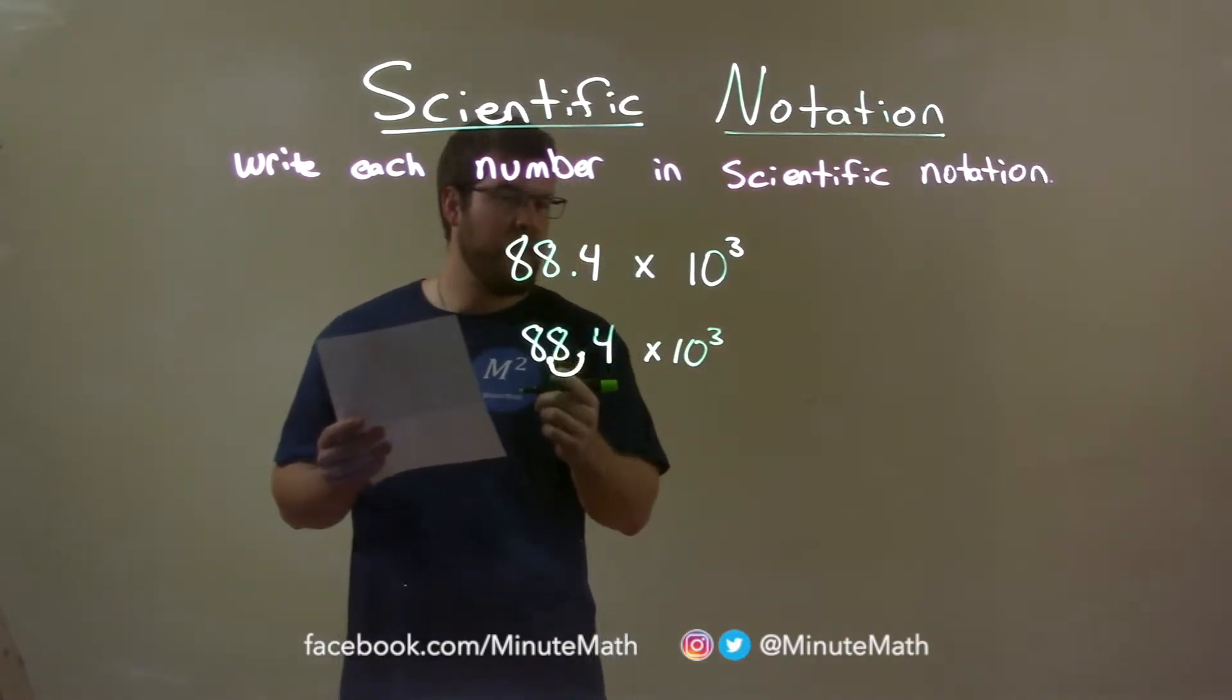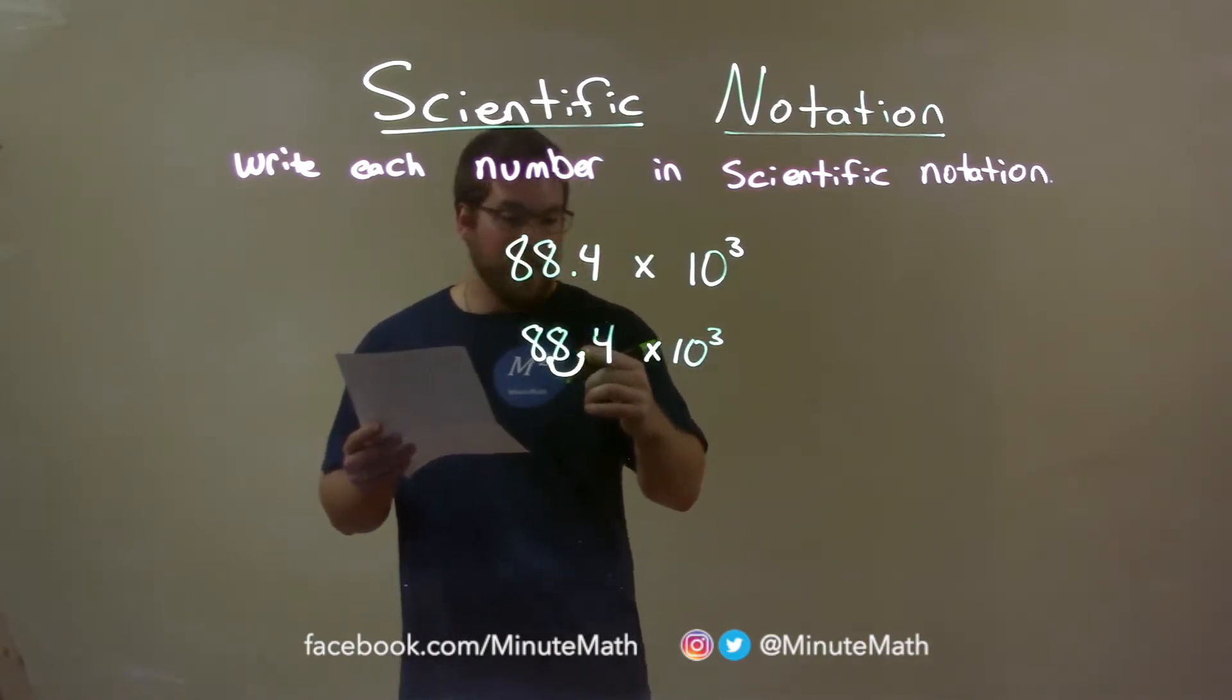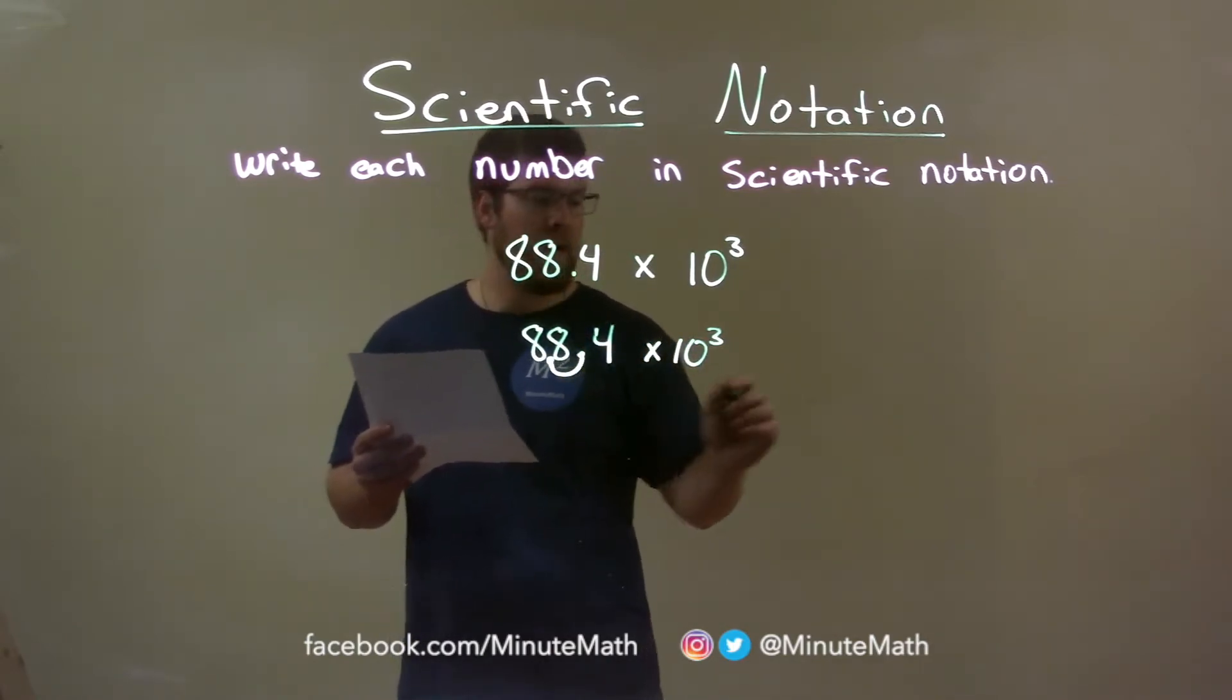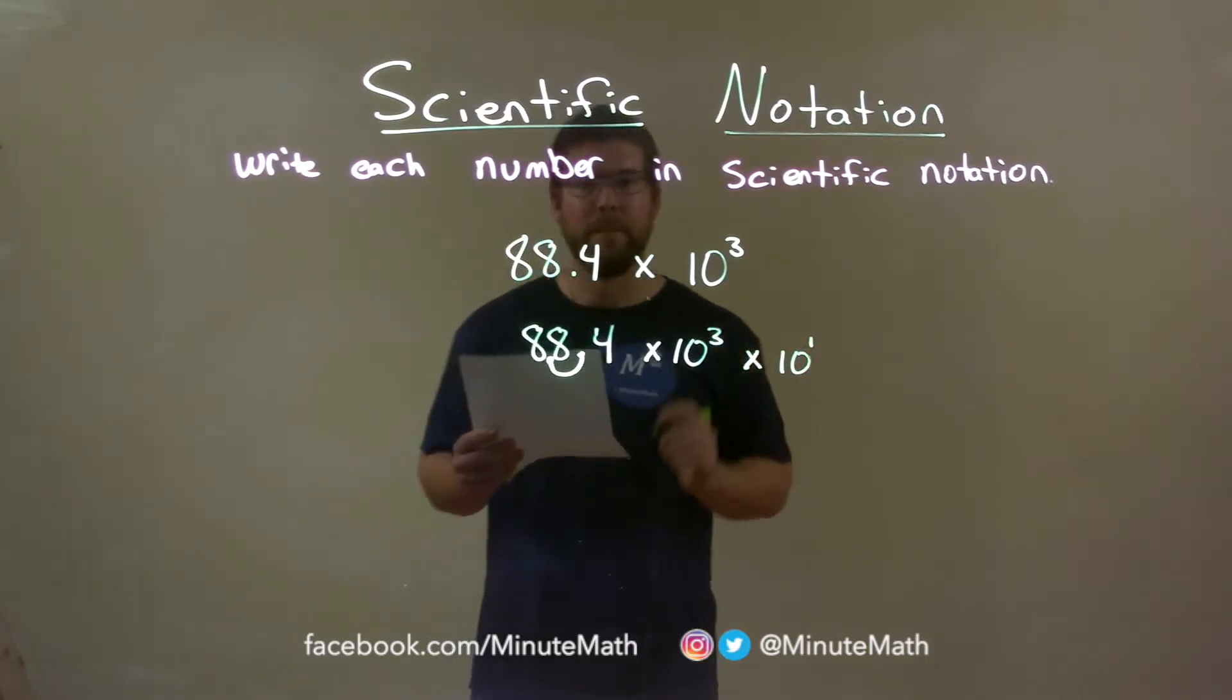But this now is not the same as the one up top. To counteract the move of the decimal to the left one spot, I still need to multiply by 10 to the first power.